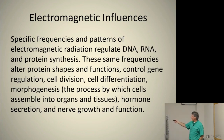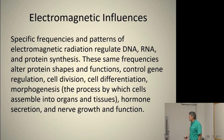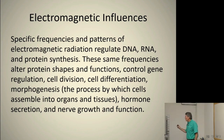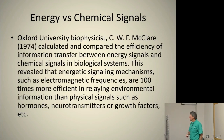Your specific frequency and patterns of electromagnetic radiation regulate your DNA, RNA, and protein synthesis. These same frequencies alter protein shapes and functions. They control gene regulation, cell division, cell differentiation or morphogenesis — the process by which cells assemble into organs and tissues — hormone secretion, and nerve growth and function. They have an effect on all of these vital functions that help us maintain and work as a body and a system as a whole.